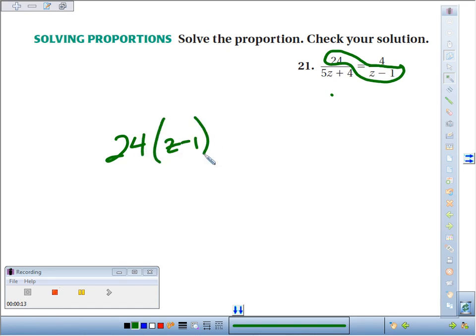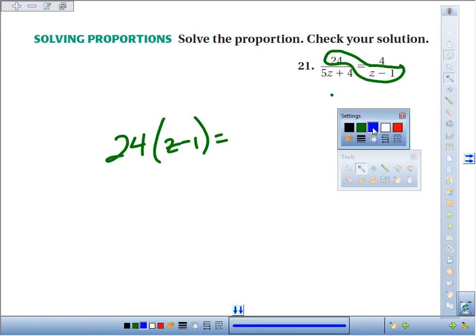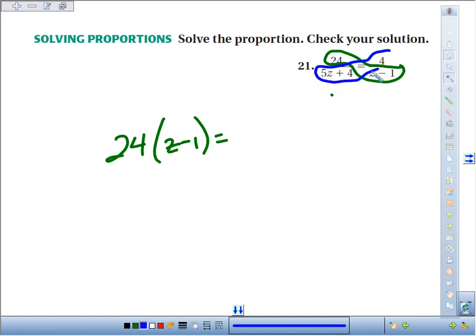So 24 times the quantity z minus 1 equals 4 times the quantity 5z plus 4. If we distribute, 4 times 5z is 20z, and 4 times 4 is 16.